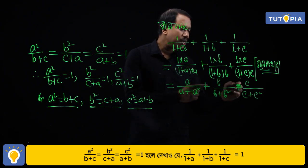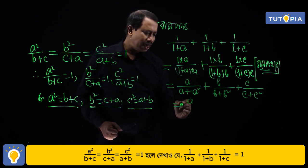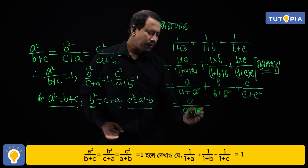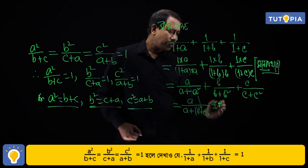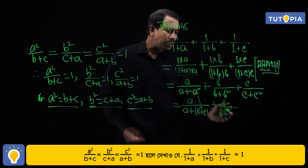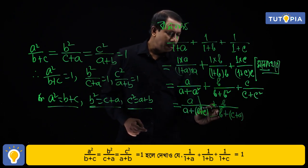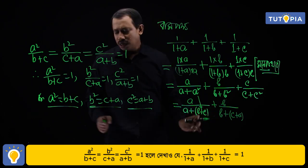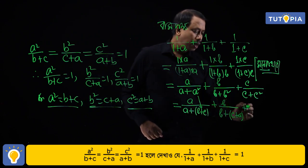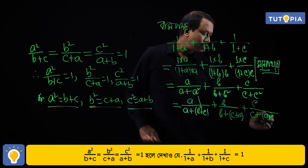Since a² = b+c, b² = c+a, and c² = a+b, substituting gives us: a/(a + b + c) + b/(b + c + a) + c/(c + a + b), which simplifies to (a + b + c)/(a + b + c) = 1.